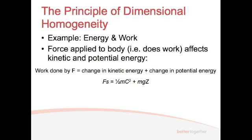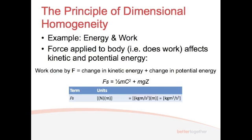Does this follow the principle of dimensional homogeneity? Let's look at the units for each of these terms. The first term is the work done, which is force times distance. The units of force are newtons and the units for distance are metres. Newtons are mass times acceleration — kilograms times metres per second squared — and we're then multiplying that by metres to get the distance. So our total units for work are kilogram metres squared per second squared. These things in the square brackets are the units of each of the terms.